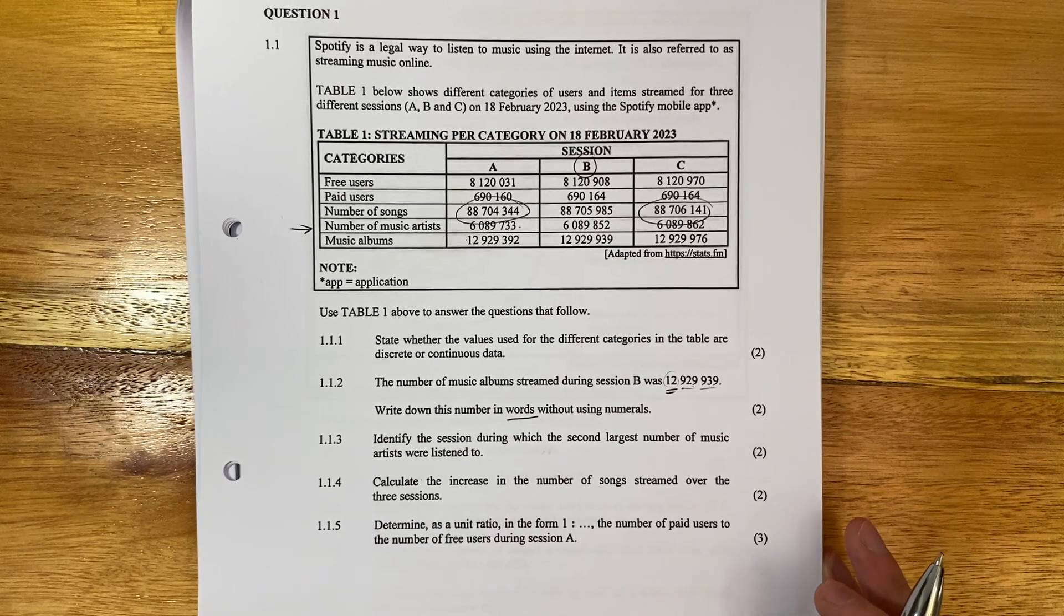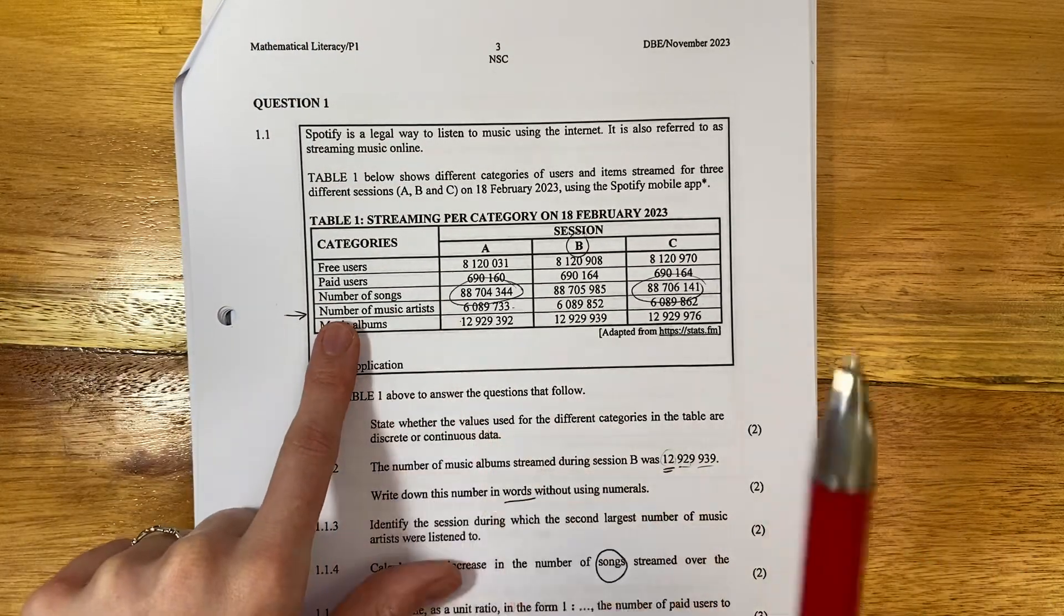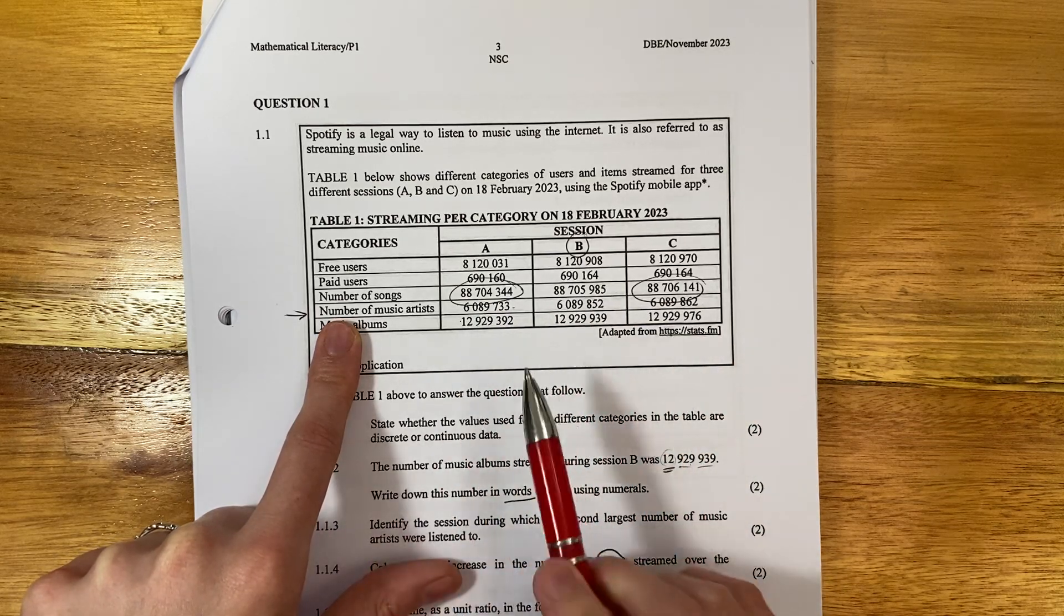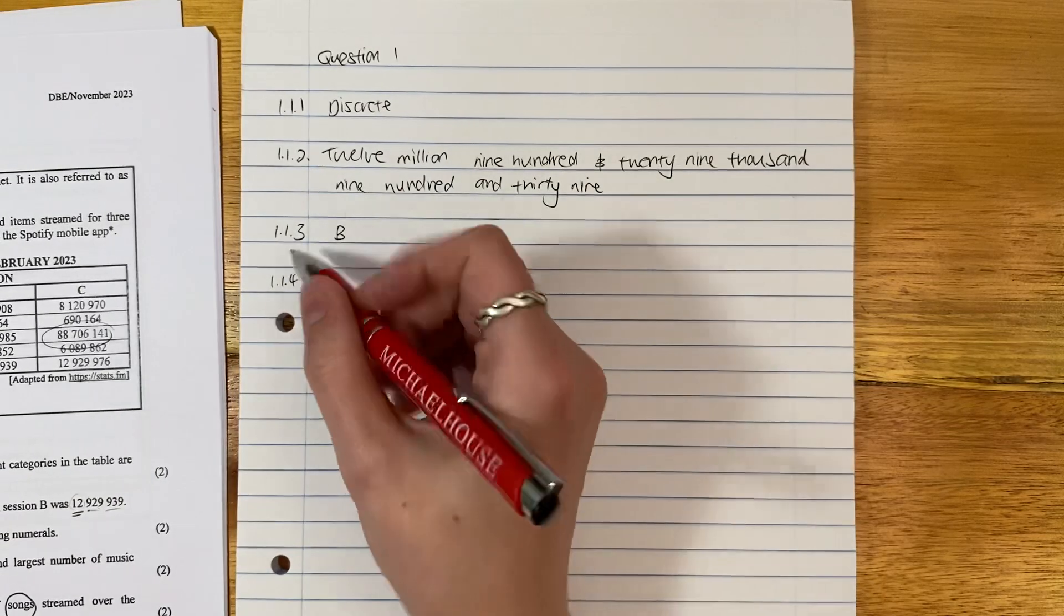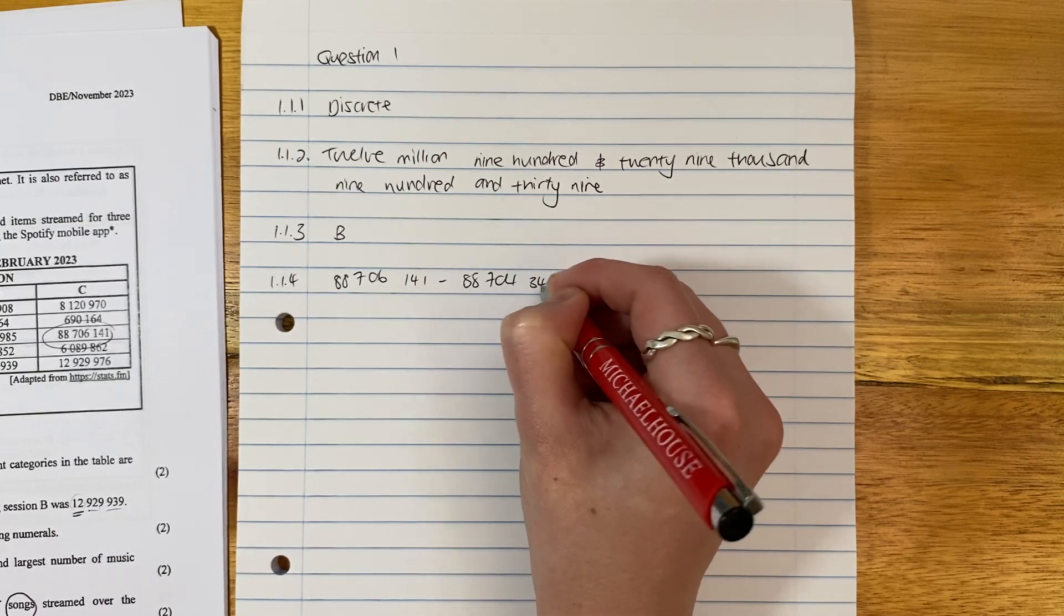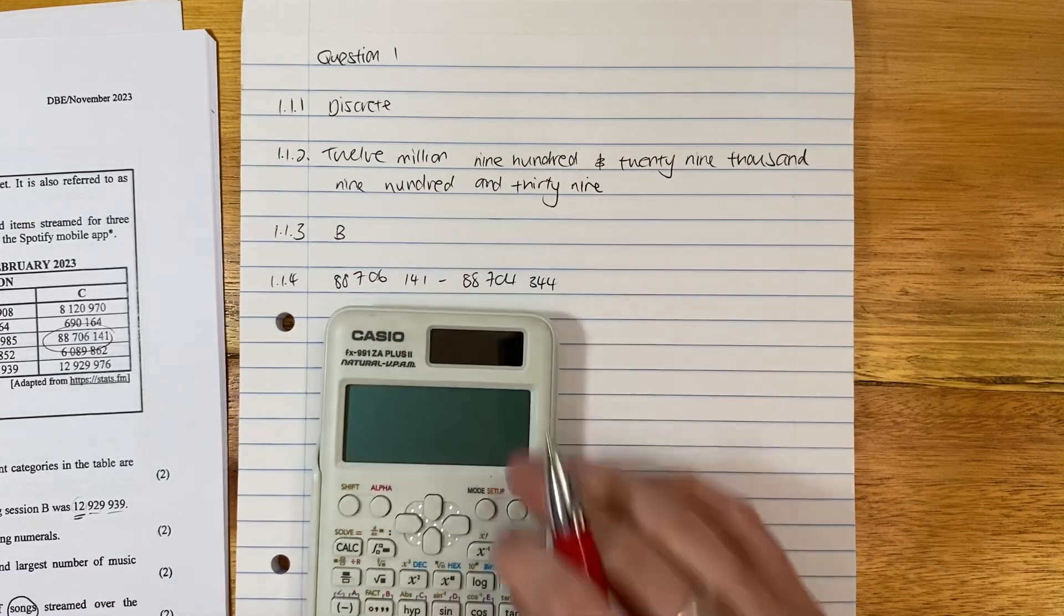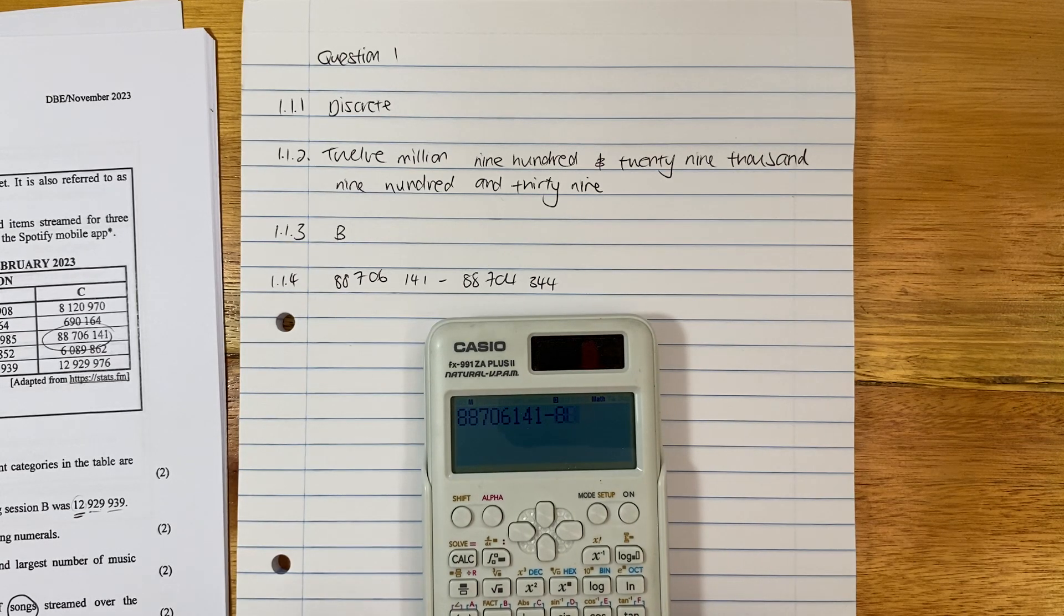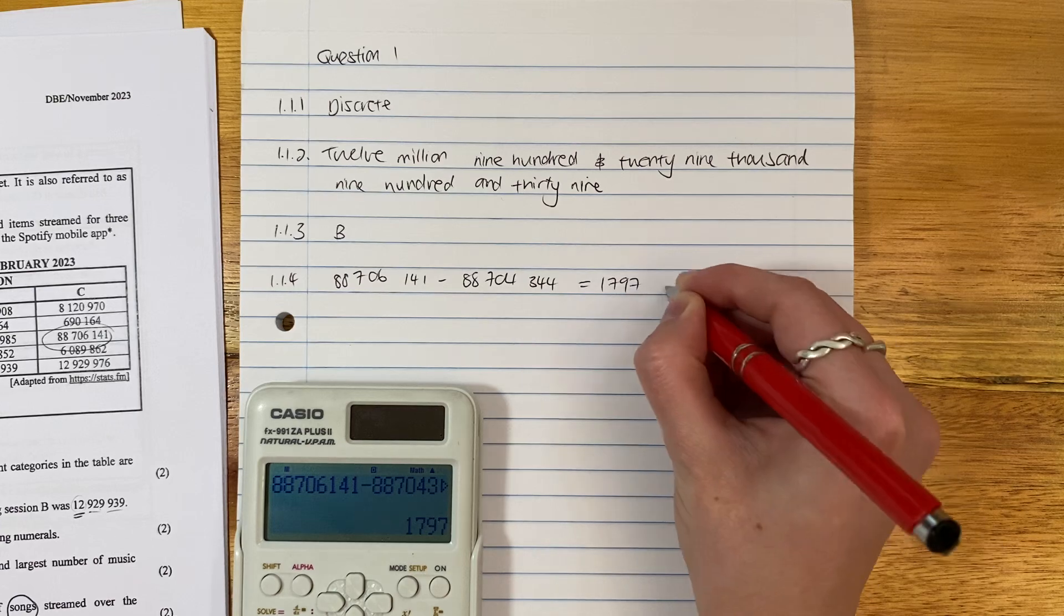Calculate the increase in the number of songs, important, streamed over the three sessions. So here's the number of songs. We can see that from session A, it went up to session B and went up to session C. So actually, all we want is the difference between session C and session A. So we just say here, 88706141 minus 88704344. Make sure that you have your calculator on hand. Pop this in. So it is 88706141, I keep thinking this is like a phone number, 88704344. The difference is 1797 songs.